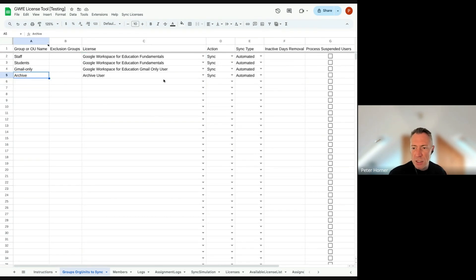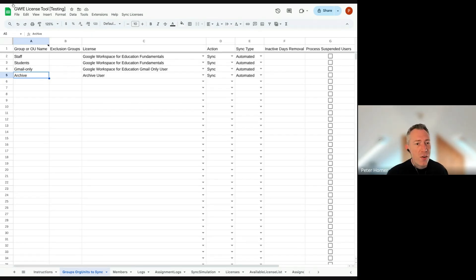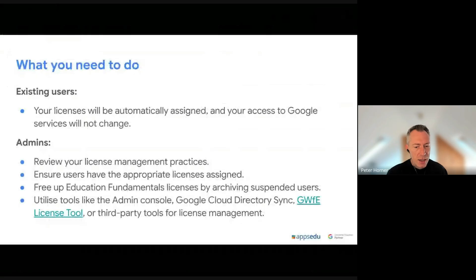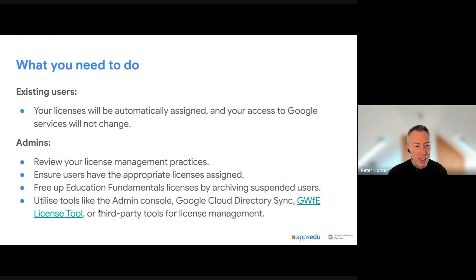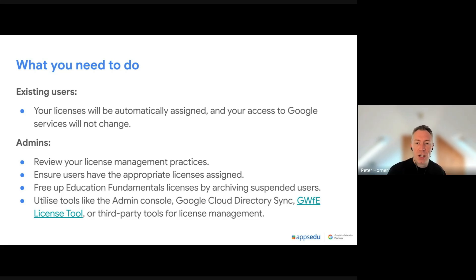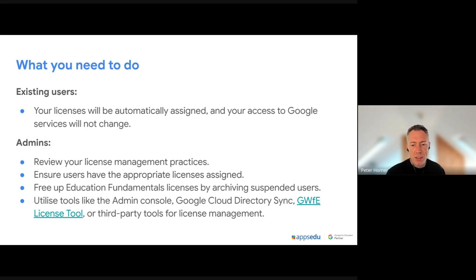The tool is currently being updated and the new version supporting Fundamentals license management will be released later this week, so do check back if that's of interest. You can also use other third-party tools like GAM, or ClassLink — if you're a ClassLink user, one of its features is that it can assign and remove licenses, and archive and unarchive users using rules you build in ClassLink, making it another powerful product for managing different license types.